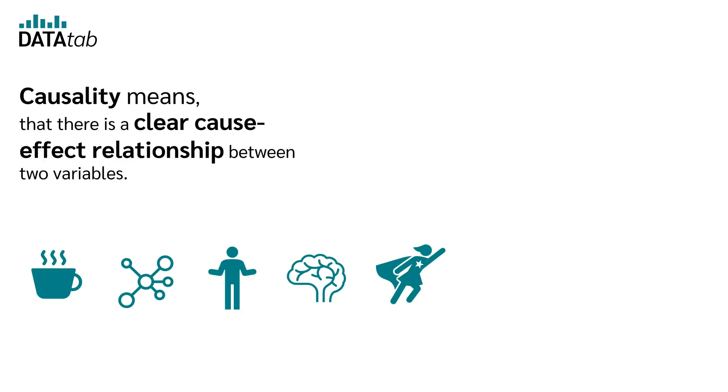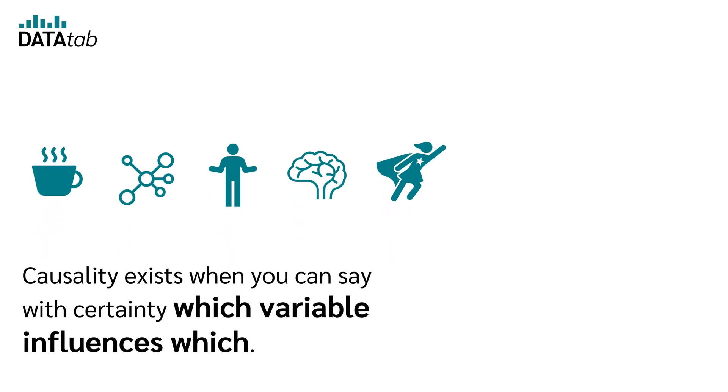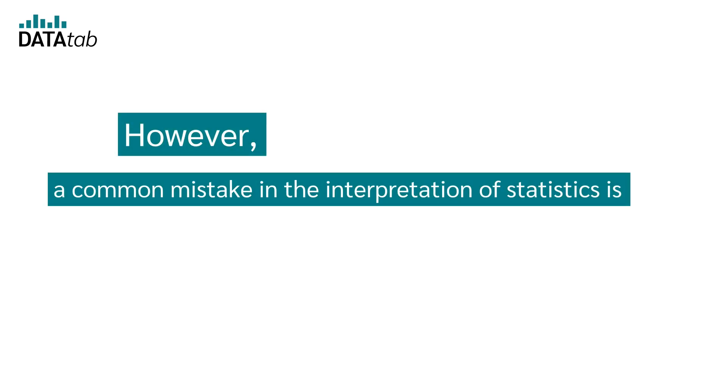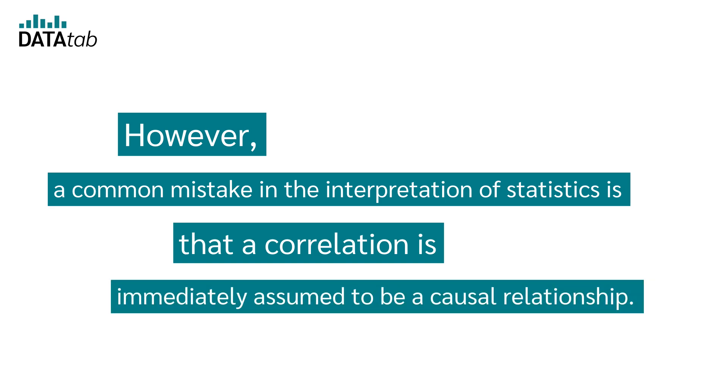Causality means that there is a clear cause-effect relationship between two variables. Causality exists when you can say with certainty which variable influences which. However, a common mistake in the interpretation of statistics is that a correlation is immediately assumed to be a causal relationship.